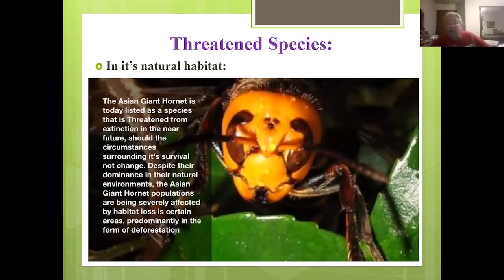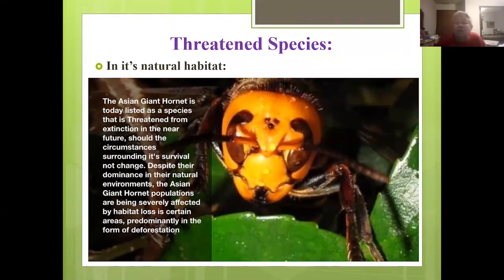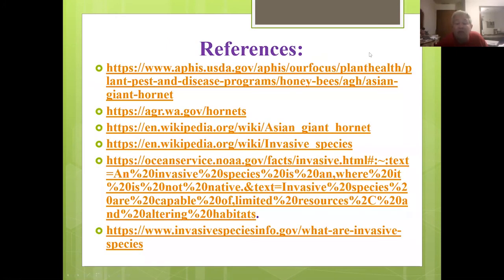Surprisingly, in its natural habitat, the Asian giant hornet is a threatened species. Their forests and natural habitats in their native countries are being cut down for agriculture to make way for fields. So they're losing their habitat and are considered a threatened species in their native countries — we just don't want them here.